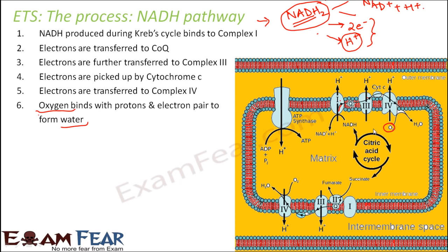If oxygen were not present, there would be nobody to accept these electrons. In that case, too many electrons would accumulate and the proton gradient would not be created. As this process takes place, the electrons get transferred and finally accepted by oxygen to form water. At the same time, every time an NADH binds to complex 1, hydrogen ions are pumped into the intermembrane space, so the concentration of hydrogen ions in the intermembrane space increases — far too many hydrogen ions there compared to the matrix.